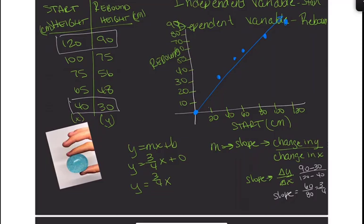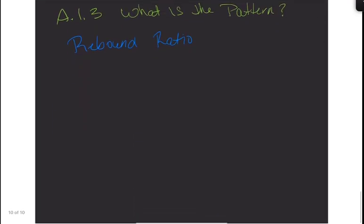Maybe we need to put our cell phones away so we can pay attention to the lesson. Thank you. So that rebound ratio was that change in the y over the change in x, or our slope, in which we got three-fourths. All right. So we know that our rebound ratio from yesterday was three-fourths.